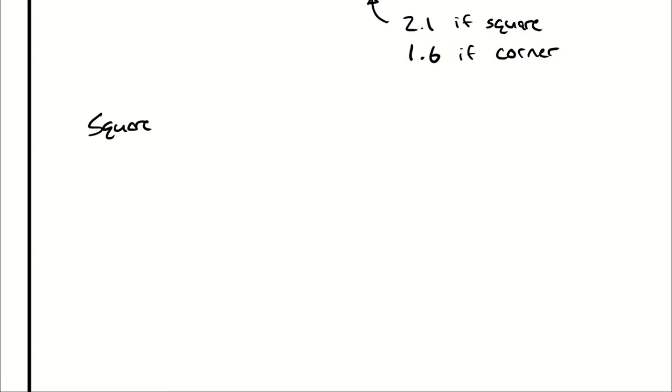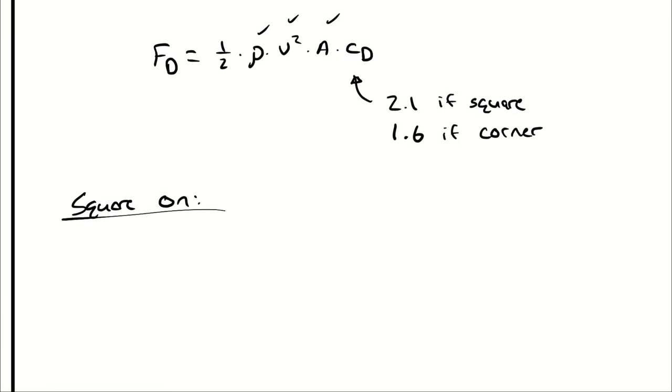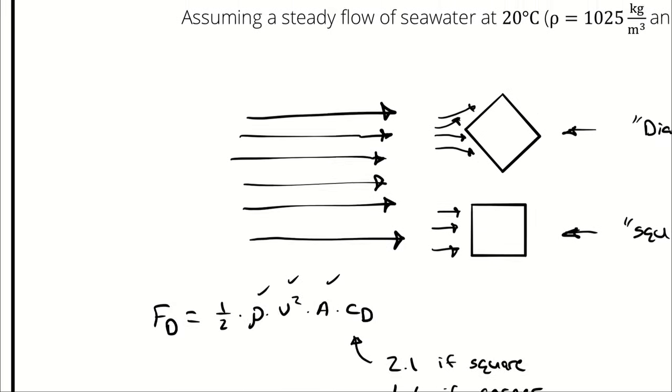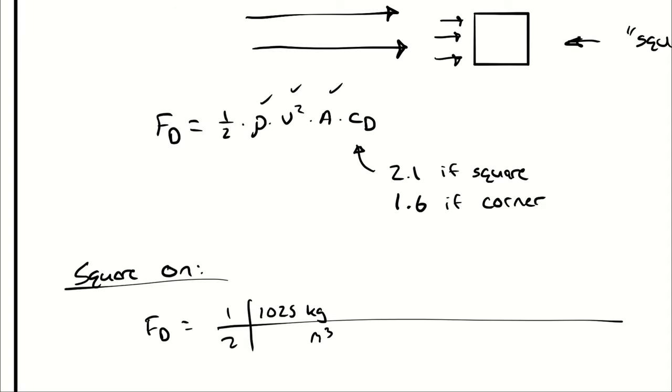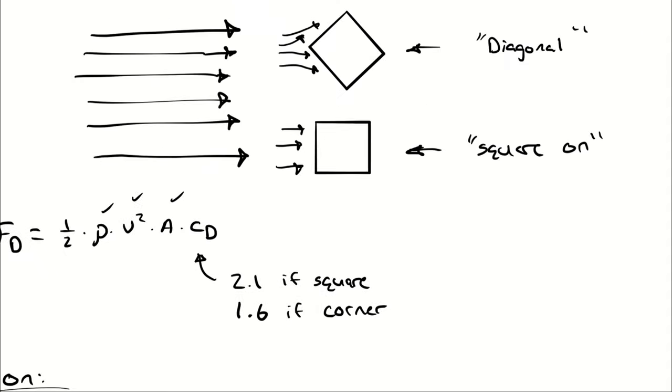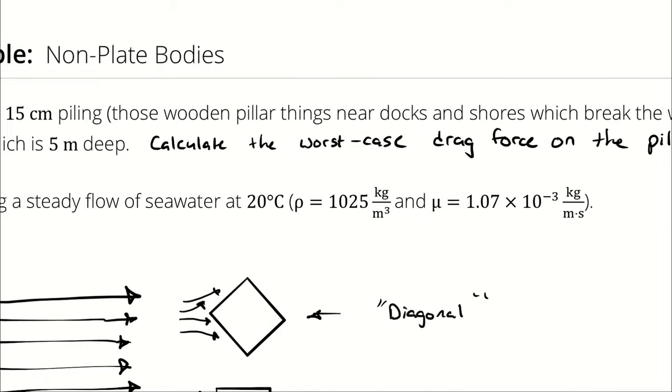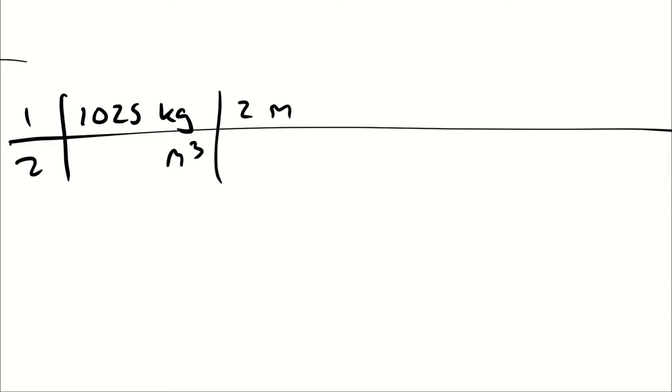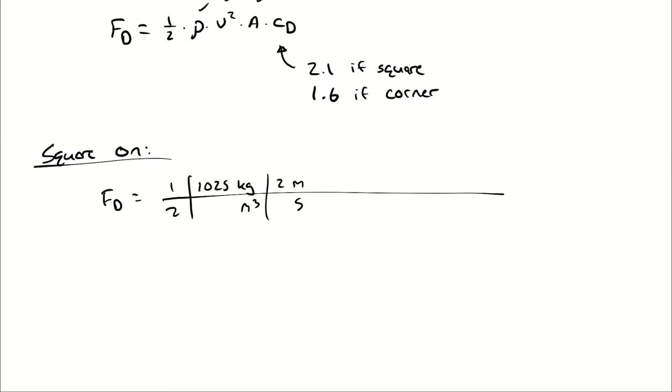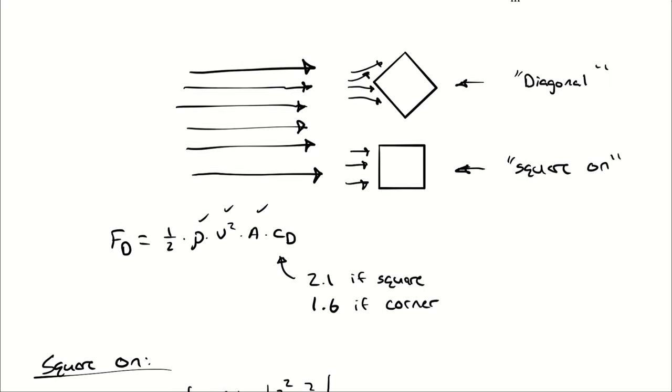So for the square on orientation, our drag force is going to be one-half times the density of seawater, which was 1025 kilograms per cubic meter, times our free stream velocity, which was two meters per second. And that's squared, so 2 squared meters squared per second squared. What is our area of effect?